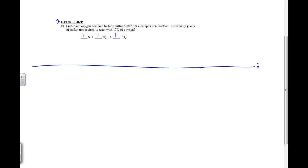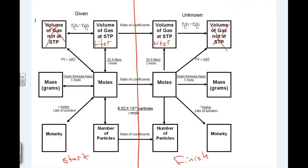Next, determine what we want in our answer. It's grams of sulfur. Next, find what we are given. We're given 17 liters of O2. So here we are. We're starting in liters and ending in grams.